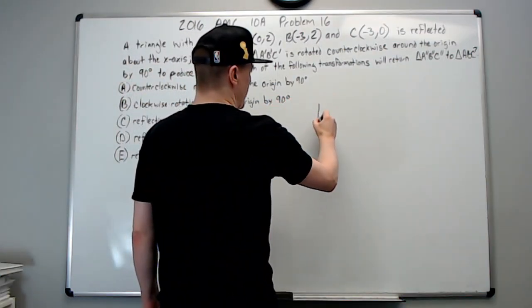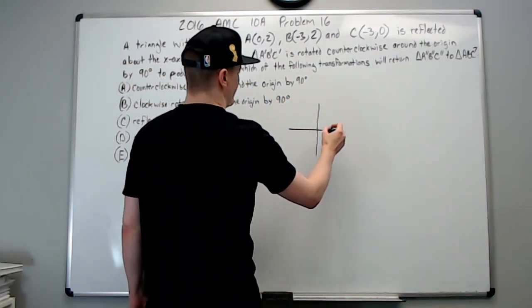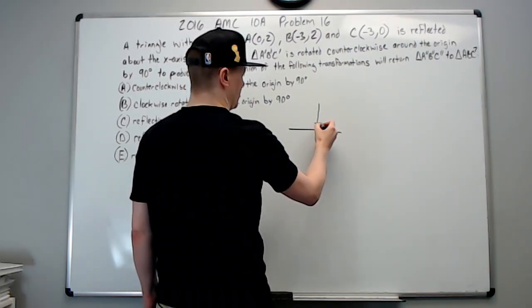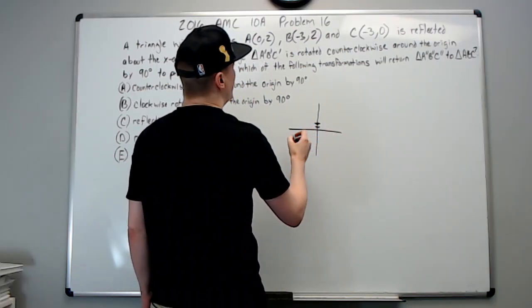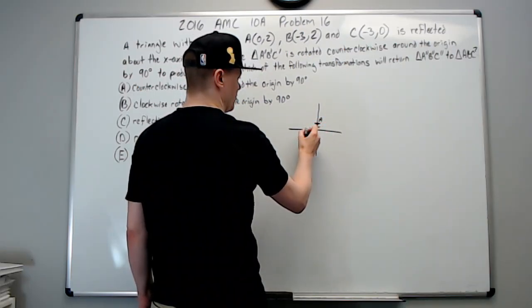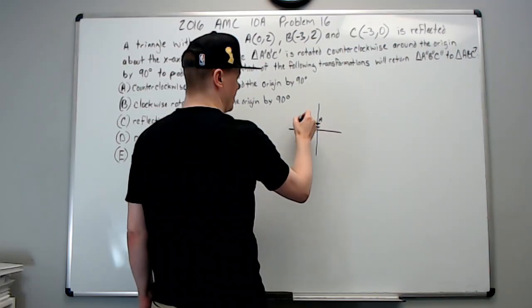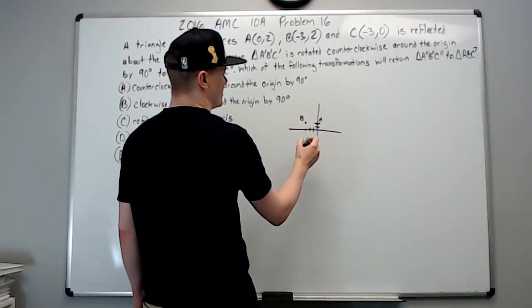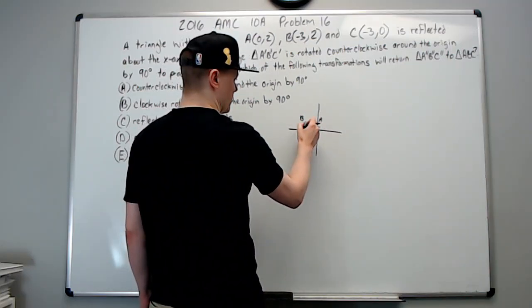Okay, so let's graph these. We have A at (0,2), so A goes here. B is at (-3,2), so one, two, three, it's right here. C is at (-3,0), so it's right here. And this is ABC.